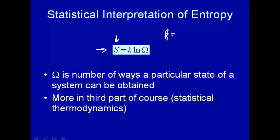K is the gas constant R divided by Avogadro's number, so essentially it's an atomic gas constant — R is per mole, K will be per molecule. Omega is the number of ways a particular state of a system can be obtained. If you have many ways to obtain a system, then omega is large and the entropy will be large. There will be more about this in the third part of the course when we talk about statistical thermodynamics.